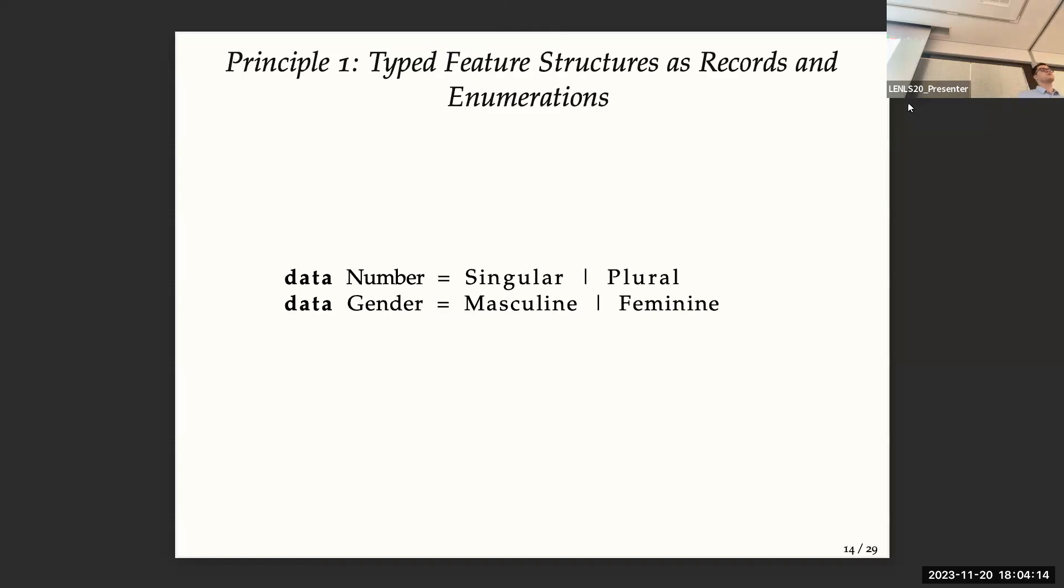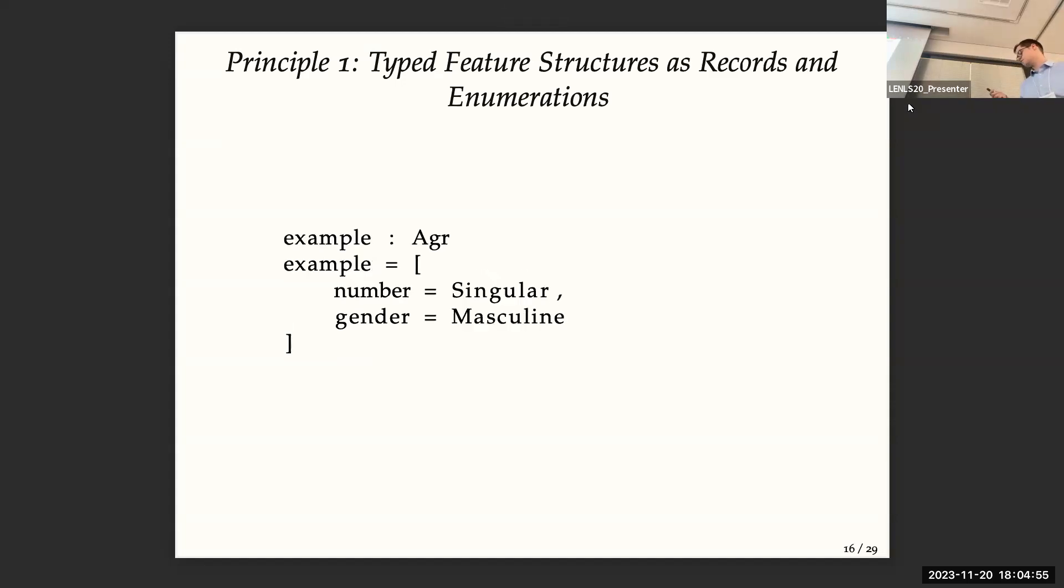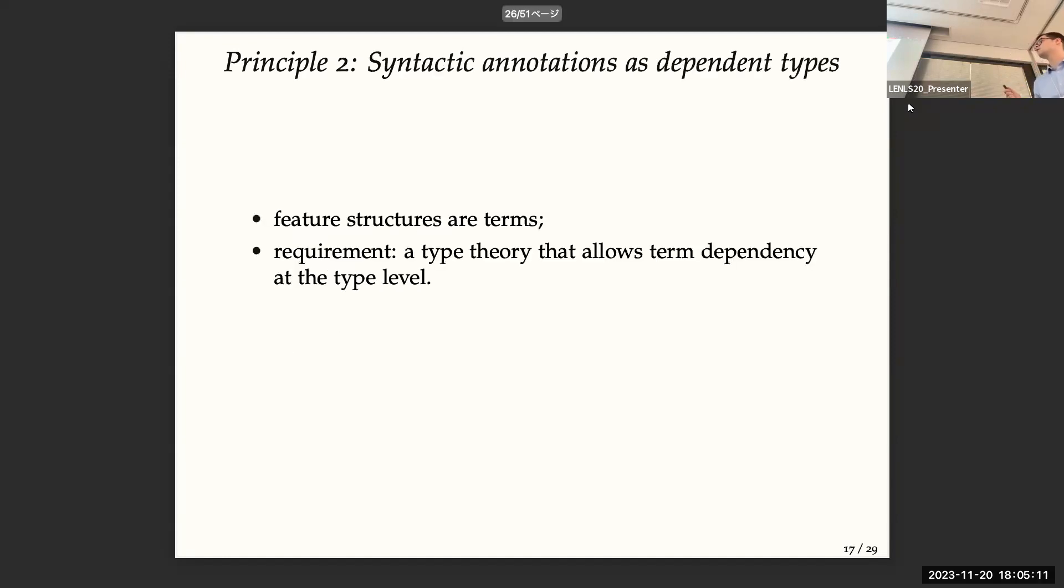So the first principle is we use basic types from functional programming, enumeration and record types, simple record types. So we define basic atomic features with enumeration. For example, the number can be defined as singular or plural in French, and the gender, masculine or feminine. And we can compound these atomic structures with records, basic records. So here we have the definition of a very basic agreement with a number and the gender. So here it's a type. And a concrete structure, feature structure, will be a term with a number singular and a gender masculine.